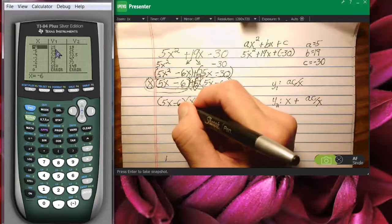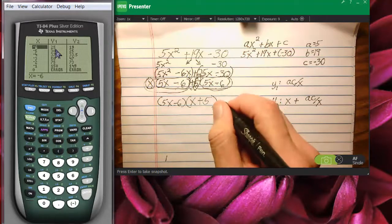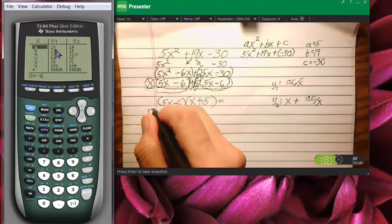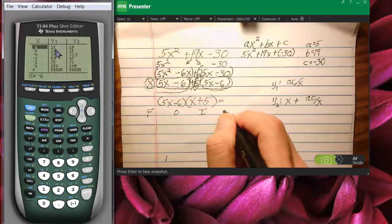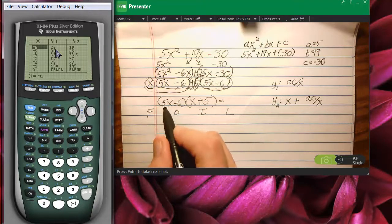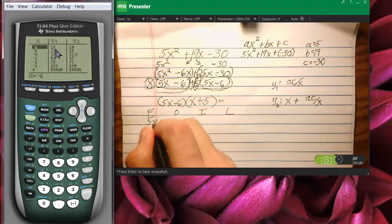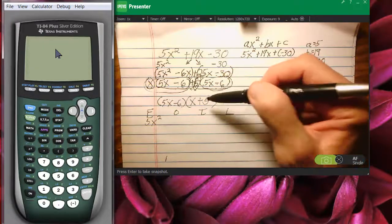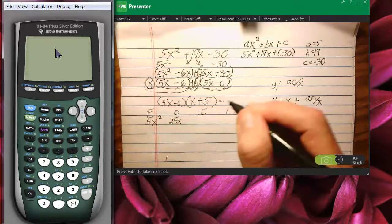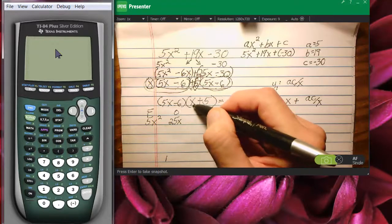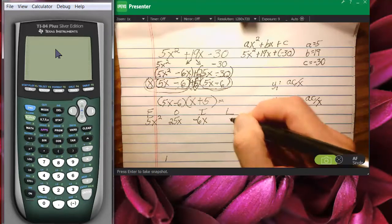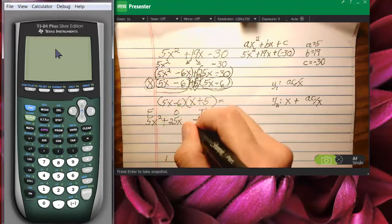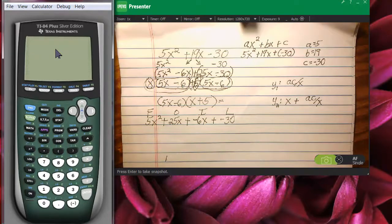Now, double check this. Make sure that this gives you back what you're looking for. Always check yourself. Never be sure you're correct. I'm going to FOIL this just to make sure I was correct. So my first terms are going to be 5x times x, which is 5x squared. My outside term is going to be 5x times 5, which is 25x. My inside term is going to be negative 6 times x, which is negative 6x. And my last terms are going to be negative 6 times 5, which is negative 30.